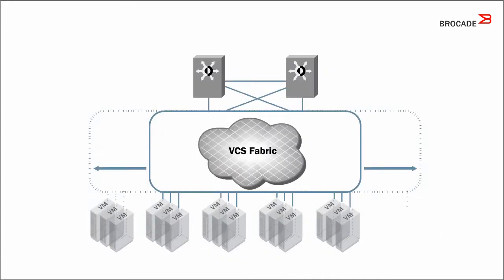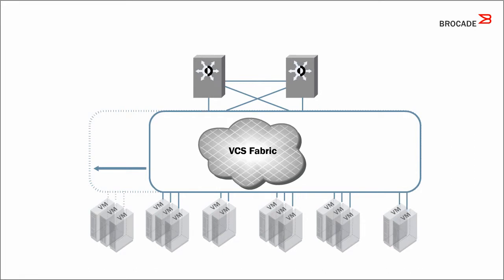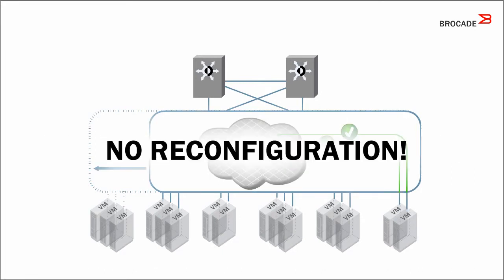Distributed intelligence helps ensure that all members of the Brocade VCS fabric are aware of one another as well as connected servers and storage. If a new virtual machine starts up or moves to a different physical server, the network knows what to do automatically — you don't have to reconfigure ports, ACLs, or anything else.